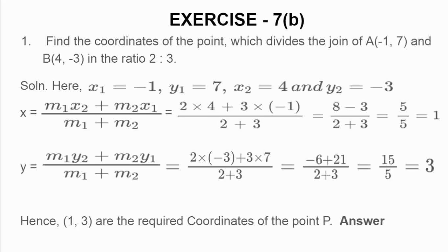Hence, (1, 3) are the required coordinates of the point P. That point P, which divides the line AB in the ratio of 2 is to 3. This is your answer. Let us proceed to another question.